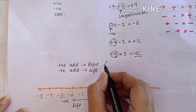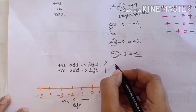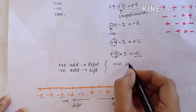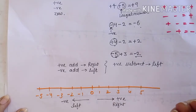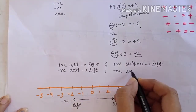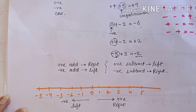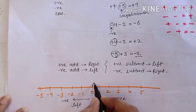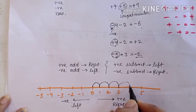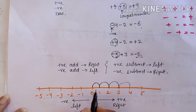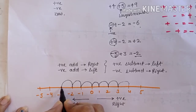Subtraction के लिए: अगर positive number subtract करना है तो left side move करेंगे, अगर negative number subtract करना है तो right side move करेंगे। Move step by step होगा — one by one हम move करेंगे।